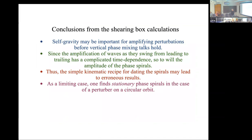The conclusions from the shearing box calculations are: self-gravity may be important for amplifying perturbations before vertical phase mixing takes hold. Once things get really phase mixed, self-gravity becomes less important. Since amplification of the waves as they swing from leading to trailing has a complicated time dependence, so too will the amplitude of the phase spirals, and the simple kinematic recipe for dating the spirals may lead to erroneous results. As a limiting case, one can find stationary phase spirals for a perturber on a circular orbit.